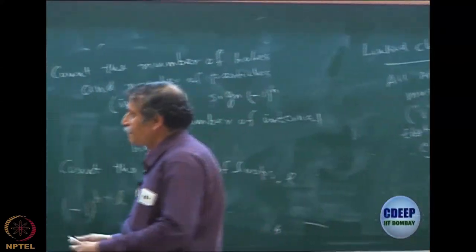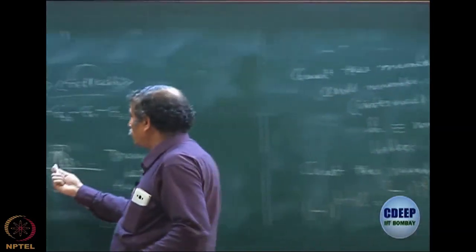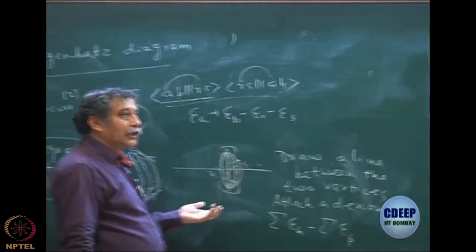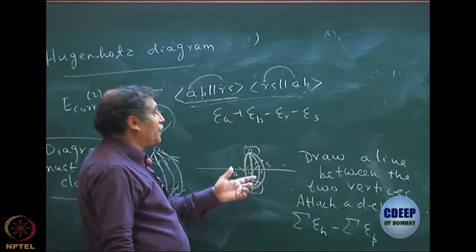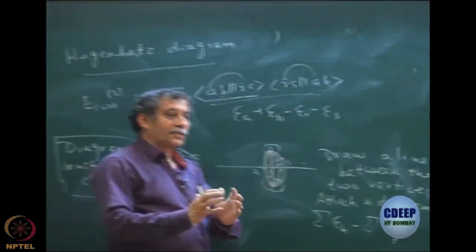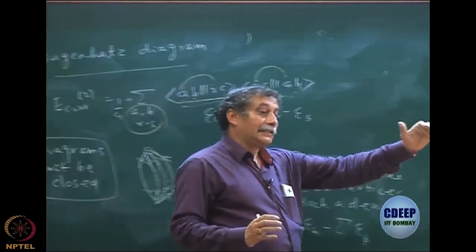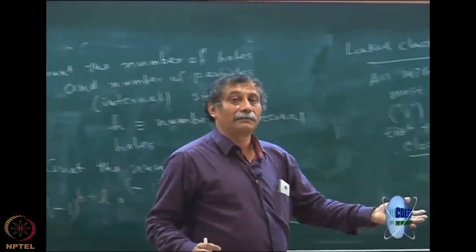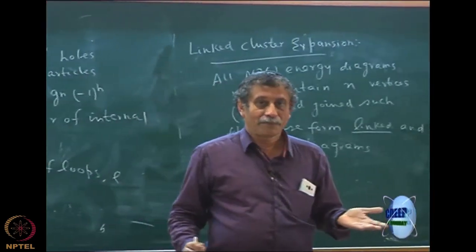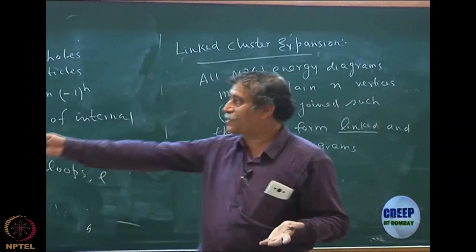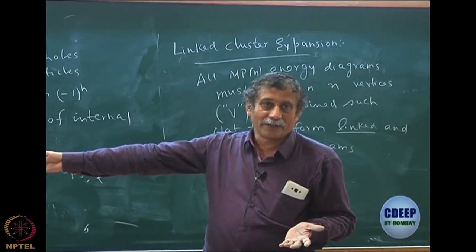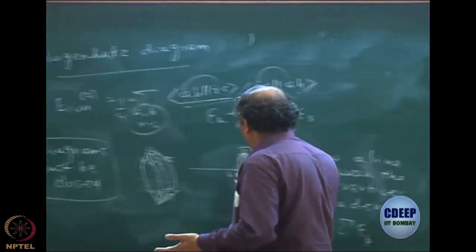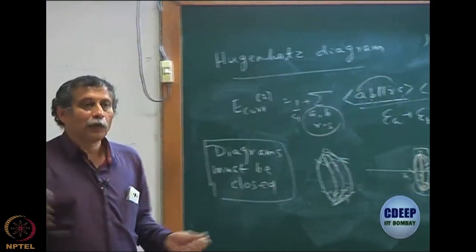Here, of course, it is closed. It is also linked. Linked means no part of the diagram should be disconnected from the rest of the diagram — that is, every part must be connected to the rest by at least one line. Here you can see that is not the case: there is no part of the diagram which is left alone.